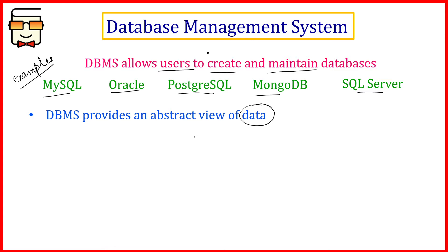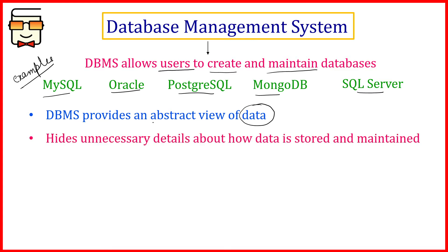DBMS provides an abstract view of data, and this is one of the key reasons why you need a DBMS. An abstract view means that if a user has requested some data, the DBMS will only provide that particular requested data and hide all unnecessary details about how the data is stored or maintained in the database.